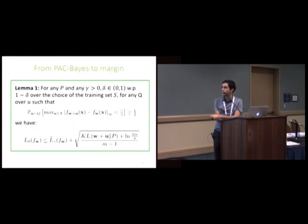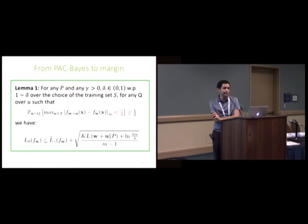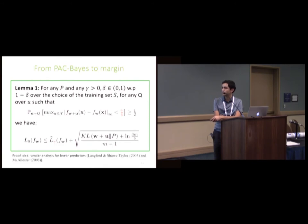This lemma is from PAC-Bayes papers and has been shown for linear classifiers. It says roughly that if you perturb parameters by U from distribution Q and with high probability the function output is not changing much, then you get this loss which is the margin loss plus KL. So it's basically saying: make sure your perturbation is not changing the function by more than the margin, and then I'm bounding the expected loss by this margin loss and I get the KL term. Similar results have been shown for linear predictors.